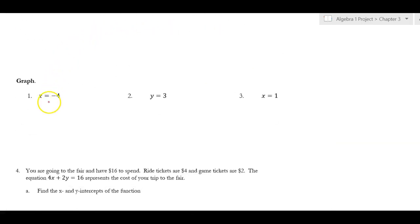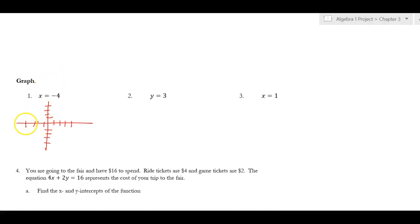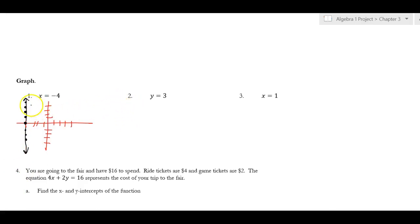Let's look at some examples. I'm going to draw a graph and put a dot at x = negative four. Everywhere I go on the graph, x is negative four, so I end up with a vertical line. Another way to think about it: I put a dot on my x-axis, and instead of running the same way as the x-axis, it goes the other way.